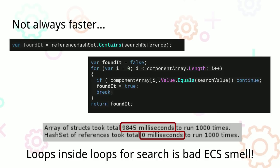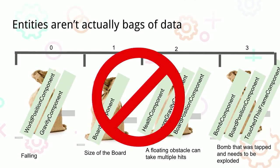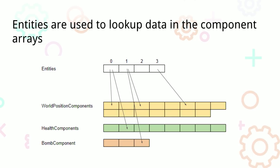Entities aren't actually bags of data — that's a bad way to think about it. More accurately, we have an array of all world positions and an array of all health components. An entity tells us which index in those component arrays is associated with it, letting us group different components together into an orc if you like. But the real goal is to process through RAM faster in a line. Thinking of it as an orc entity is helpful to us as humans, but sometimes it might be faster not to think of it that way.